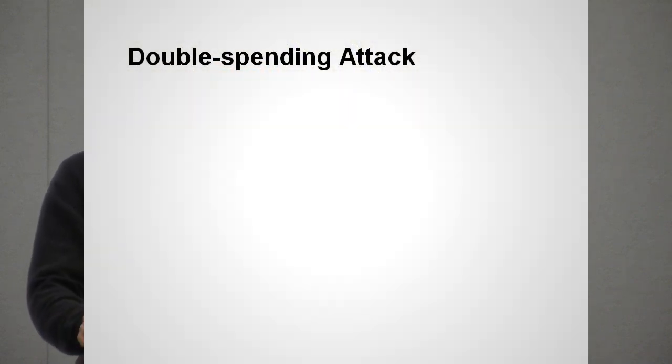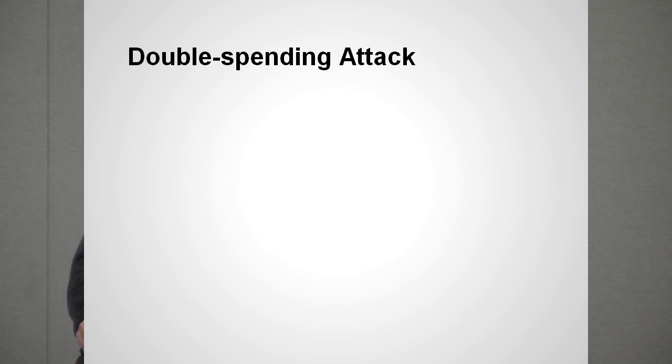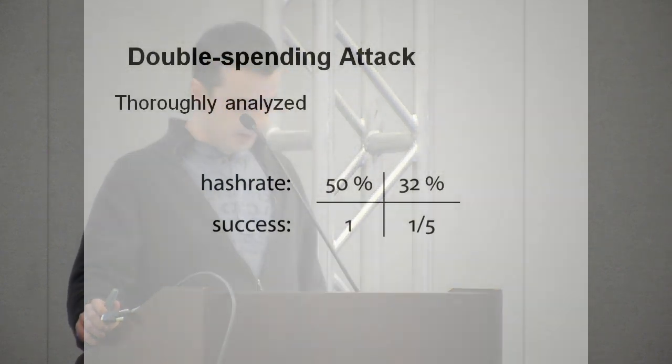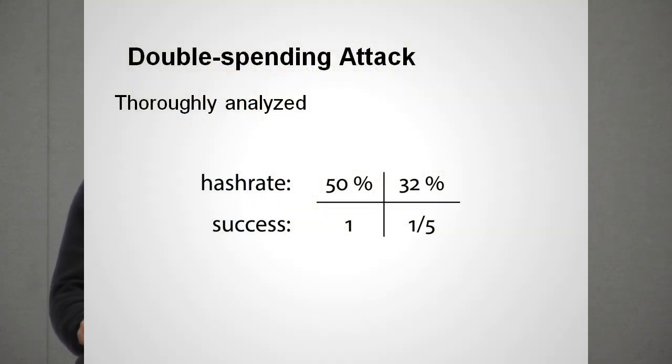I will try to briefly summarize some of the possible scenarios. A merchant, for example, is waiting for six confirmations and then ships something valuable. But his client — an attacker — has secretly prepared an already longer chain which keeps the payment for himself. After receiving the valuable goods, the attacker announces his alternative chain. The merchant, obeying the longest chain rule, can only accept the loss. This type of attack is already thoroughly analyzed by Manny Rosenfeld in his excellent analysis of hash rate based double spending.